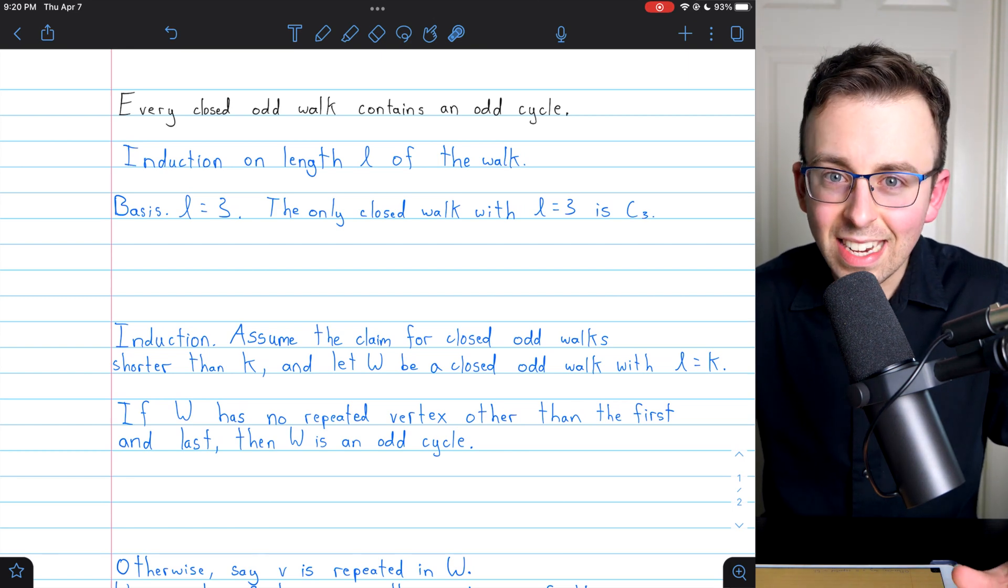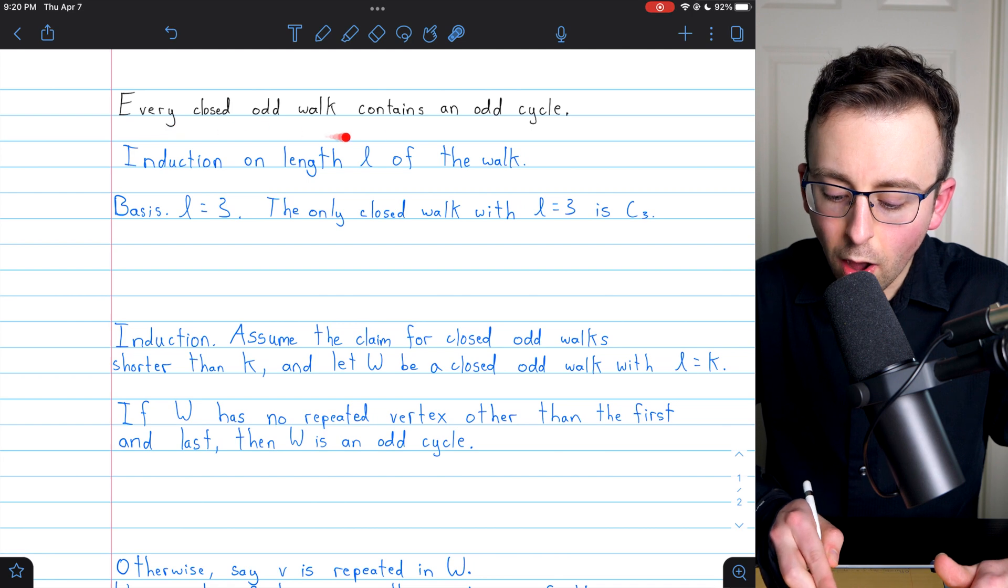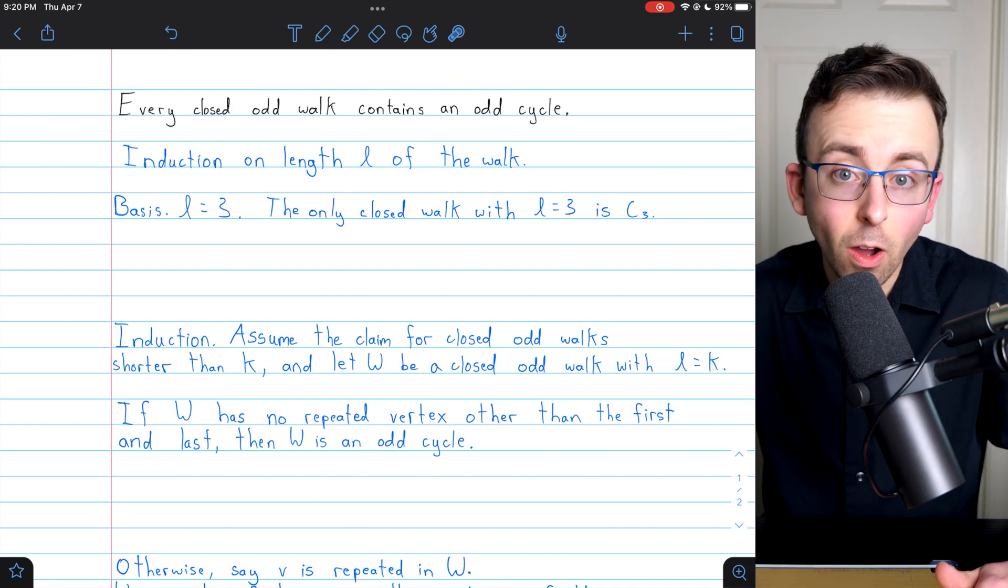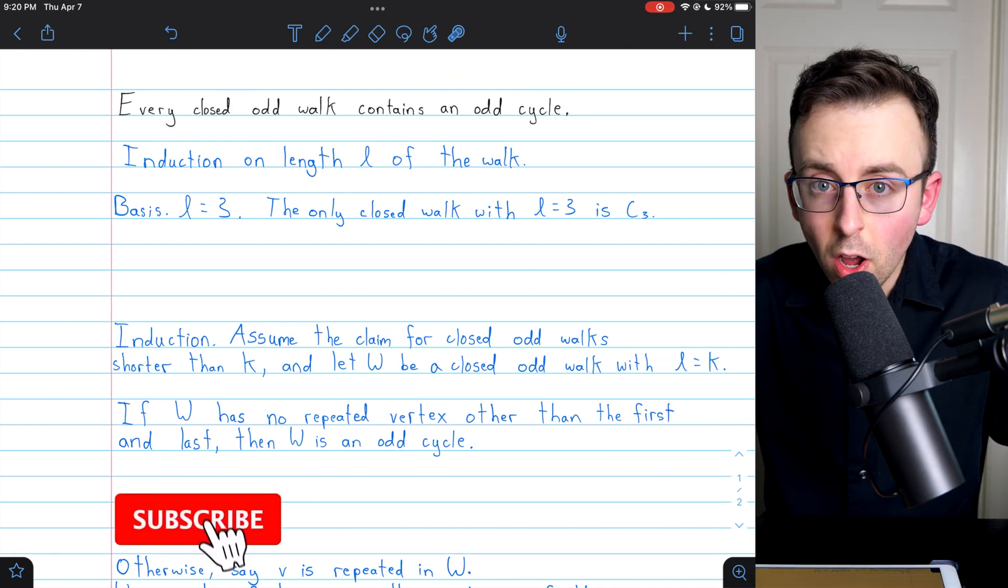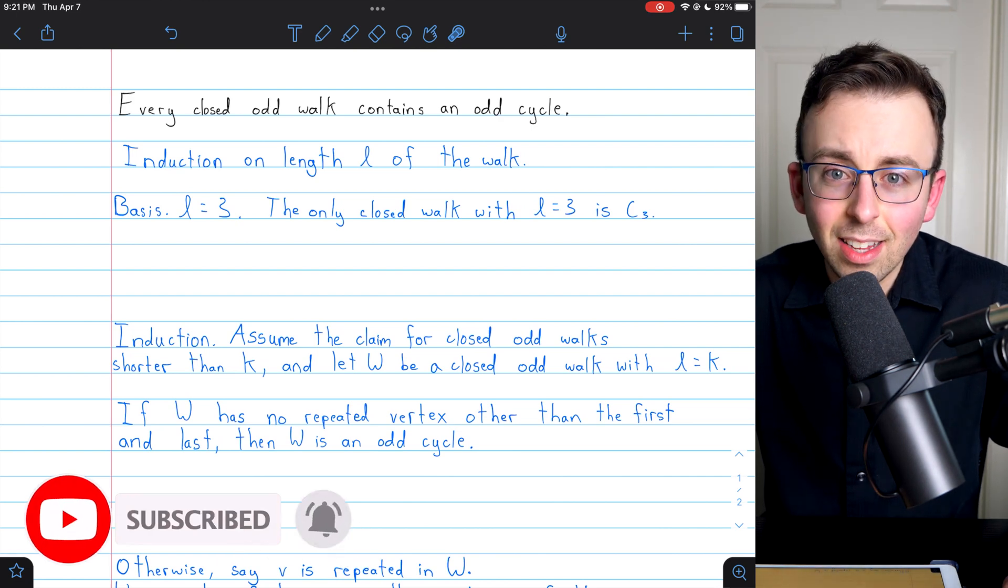Hi there. We're going to prove this neat little graph theory result: every closed odd walk contains an odd cycle. You should know what walks and cycles are already. I'll leave relevant links in the description.